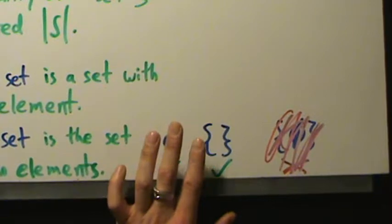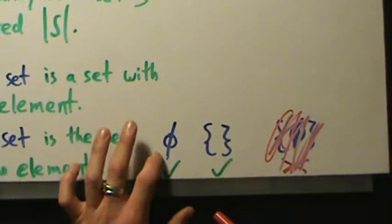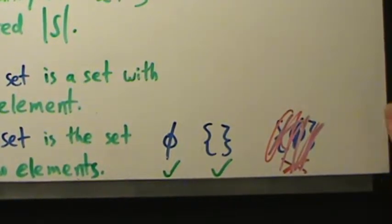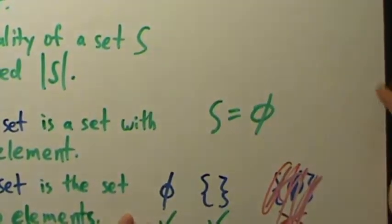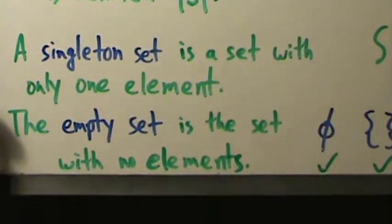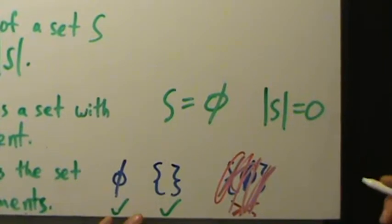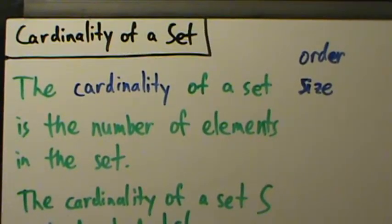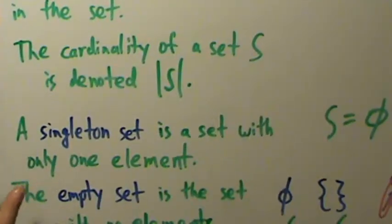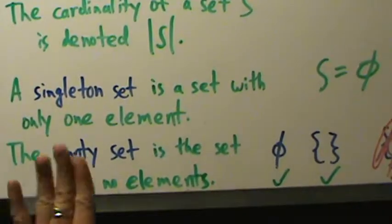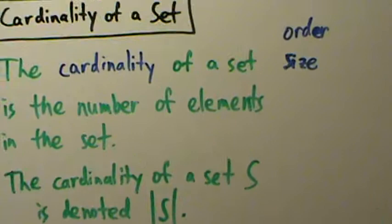I do prefer the slash-circle notation because it's a bit quicker to write, and it does show up in textbooks. But both notations are exactly the same. As far as cardinality goes, if S equals the empty set, the cardinality of S is zero, because the empty set has no elements. To summarize: cardinality, order, and size all mean the number of elements in a set. A singleton set has only one element, so its cardinality is one. The empty set has no elements, so its cardinality is zero. We'll talk more about related topics in the next video.